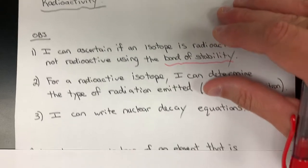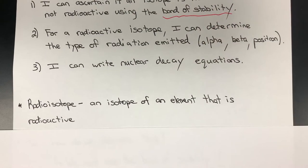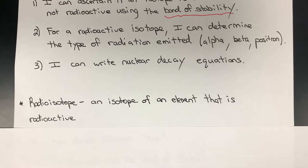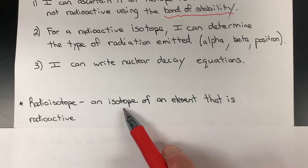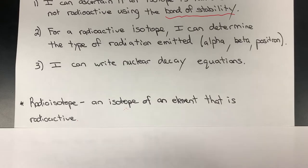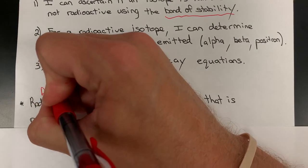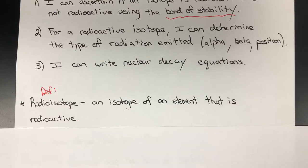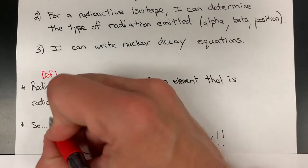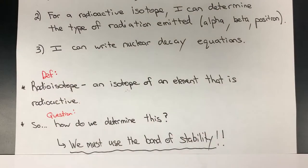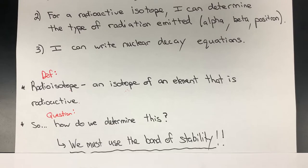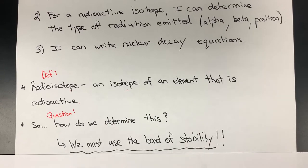Number two, if we've determined that an isotope is in fact radioactive, you should be able to determine whether the type of radiation emitted is going to be alpha, beta, or positron. And number three, using objectives one and two, can we write nuclear decay equations? You will have to open up or print out what's called the band of stability from Canvas. It's a great resource that's going to allow us to do that with relative ease.